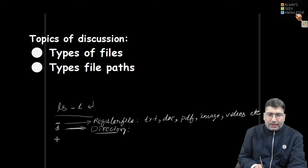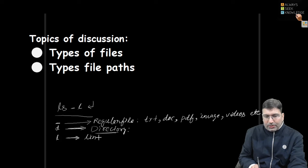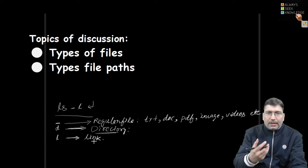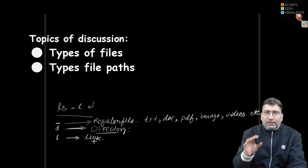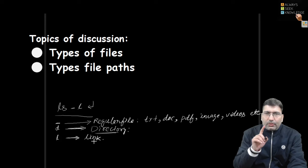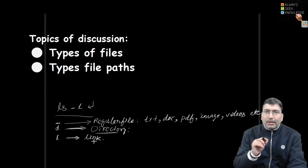If the very first character in ls -l is a small 'l', we consider it a link or symbolic link kind of file. In Windows, we consider links as shortcuts. When we install software like a game, it asks whether you want to create a link. If you click yes, a shortcut is created on the desktop. Clicking that link lets you access the software executable. That shortcut contains the address of the original file — that is the role of soft links.